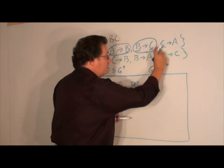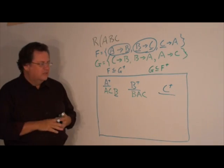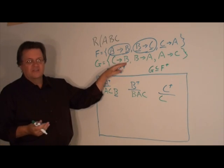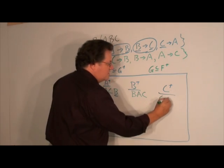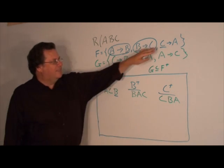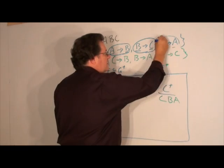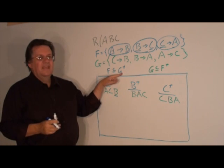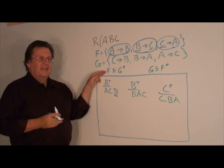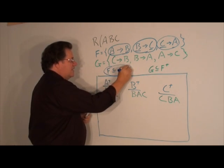Finally, we compute C closure with respect to G. It starts with C by reflexivity. Then C→B, and B→A. So C closure is C, B, A. The right-hand side A is in this closure, therefore C→A will be in G closure. We've now shown that F is indeed a subset of G closure, so we circle and check that off.